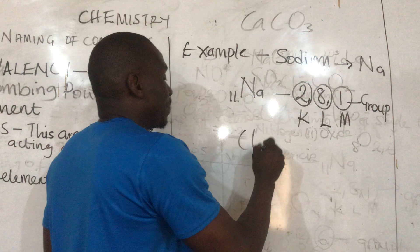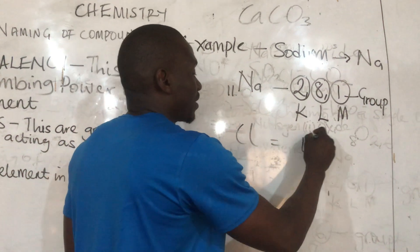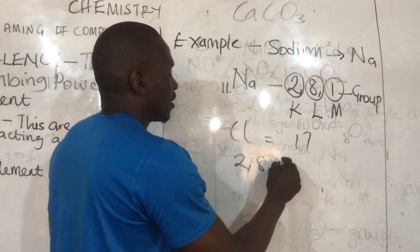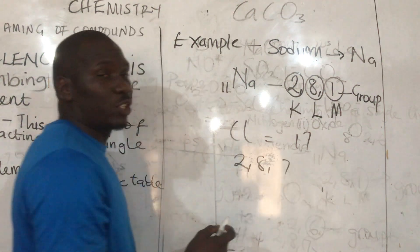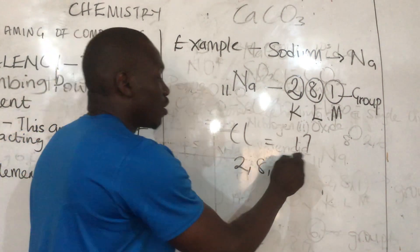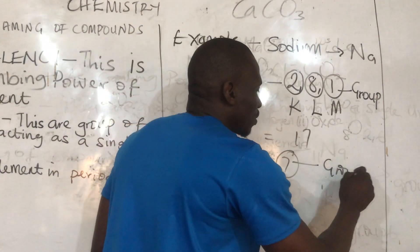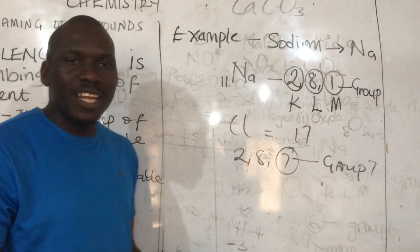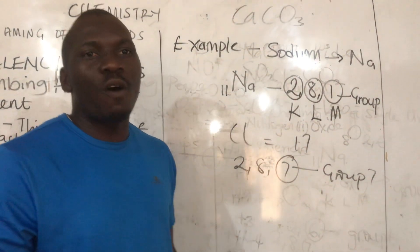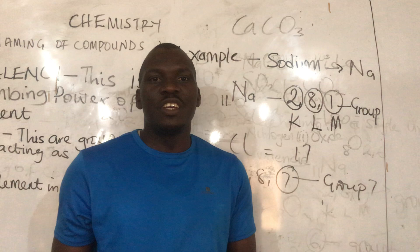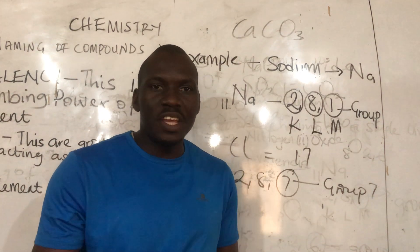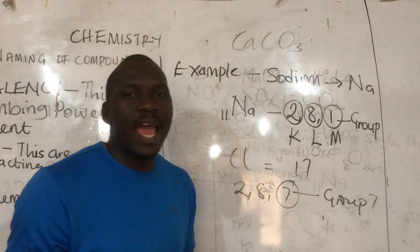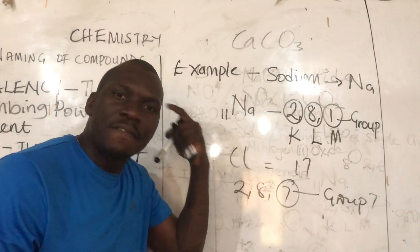Let's try another example — chlorine. Chlorine is number 17. Can we do this together? 2, 8, 7. So which group does chlorine belong to? Group 7. Knowing the groups of all 20 elements is what will enable us to know their valencies.